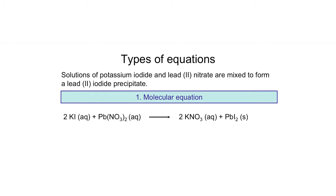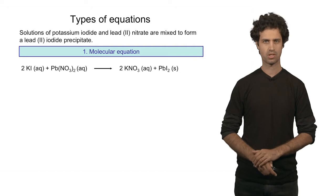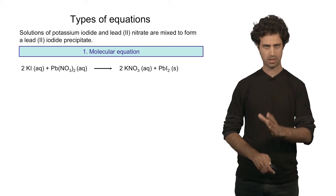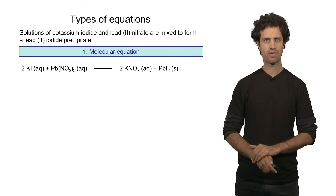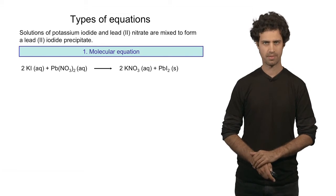On the product side we find potassium nitrate as a single compound in the aqueous phase and the precipitate lead 2 iodide, which is a solid. So the molecular equation shows all the participating species in the right stoichiometry.